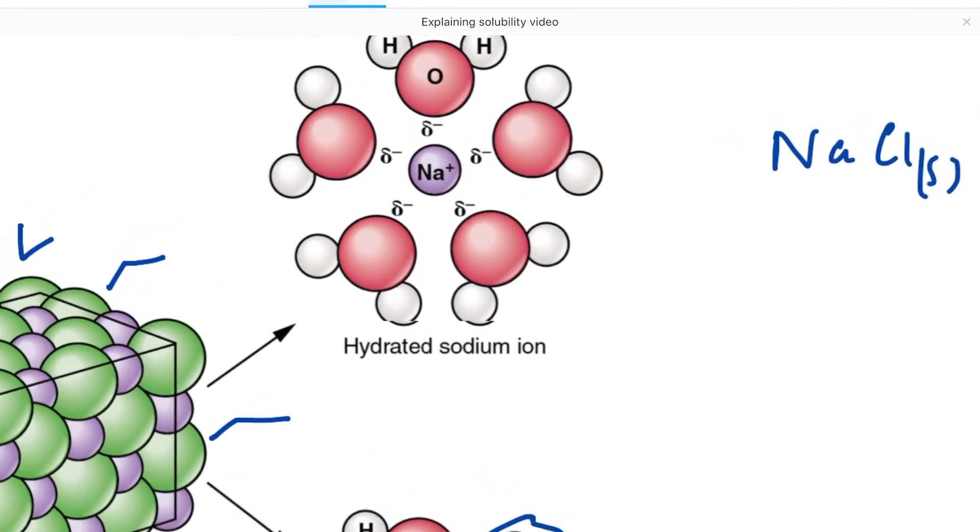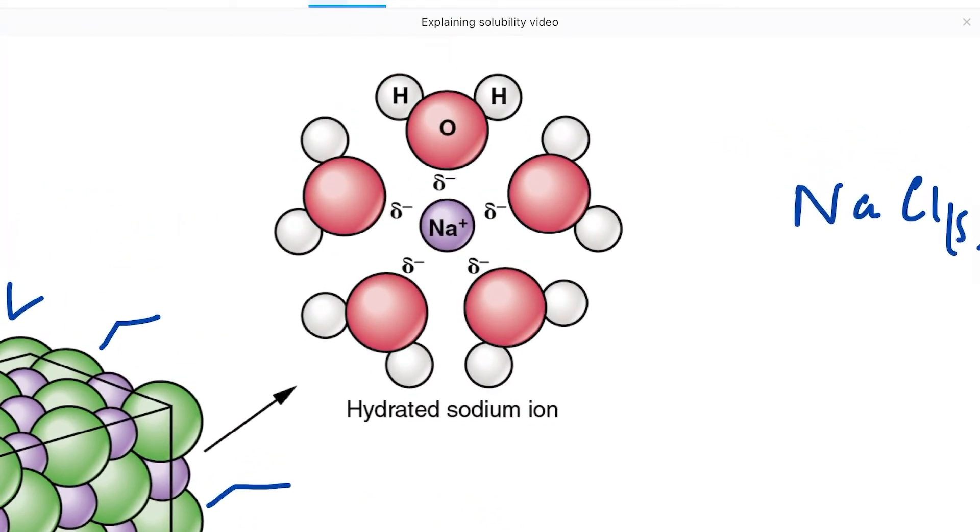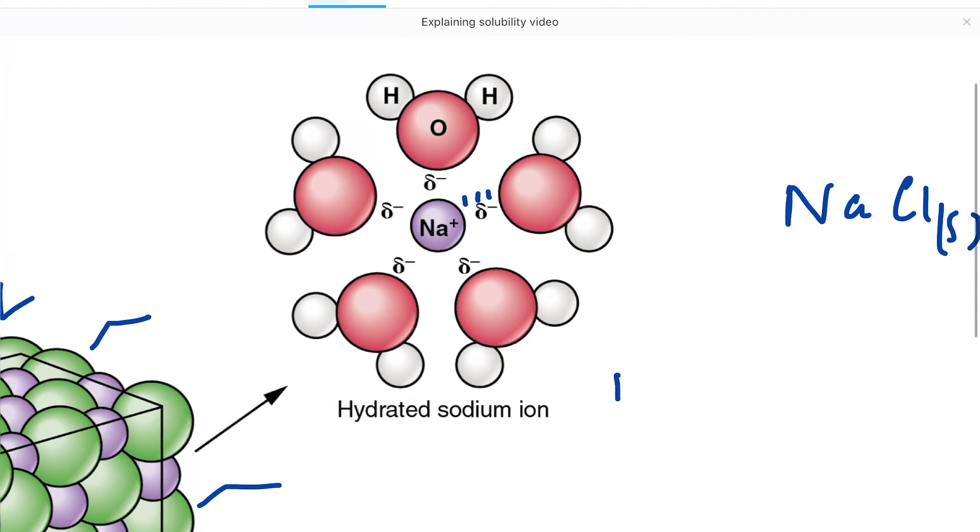If I just blow this up, I want to think about the attraction between them. This has got a name: the attraction between water molecules and oppositely charged ions is called an ion-dipole attraction. And because there are so many of them, we haven't just got four or five water molecules surrounding our sodium chloride ion—we've got layers and layers of them in three dimensions.